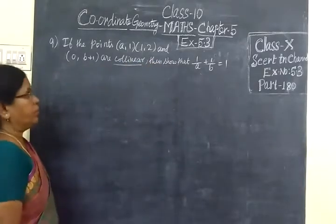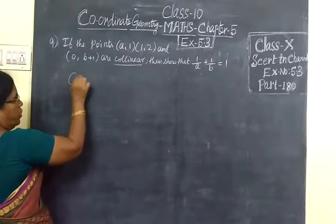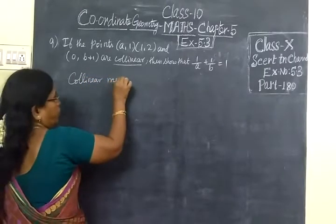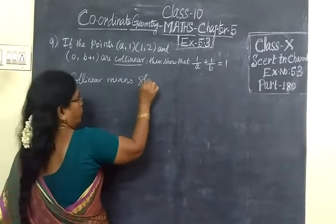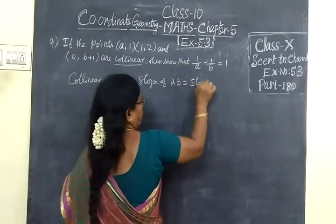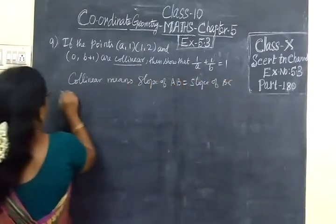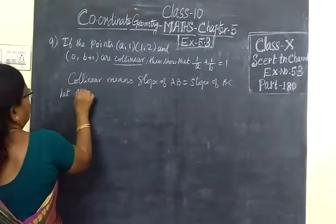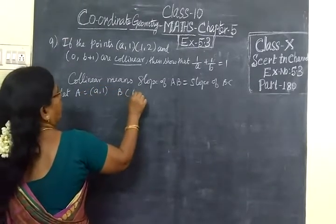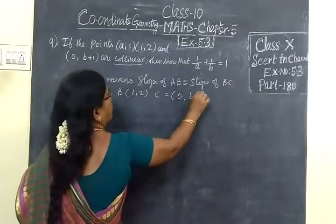Then we have to prove the condition. Collinear means we know slope of AB equals slope of BC. So let A equal to (A, 1), then B (1, 2), C (0, B+1).